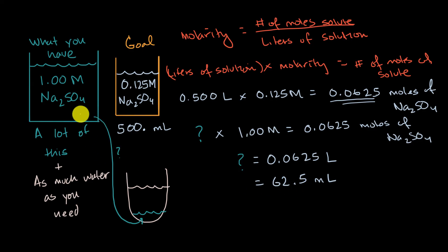What I would do is, I would take 62.5 milliliters of my original solution, so that's this over here, and then I would take my water, and then keep filling until I get to 500 milliliters. And we're done. At that point, I'm going to have a 0.125 molar of sodium sulfate aqueous solution.